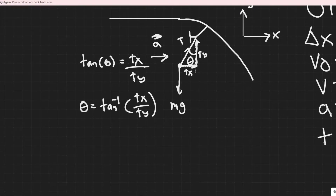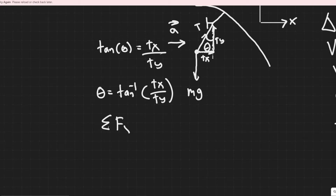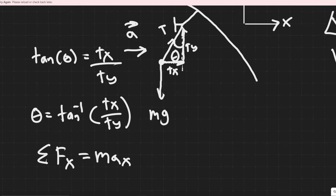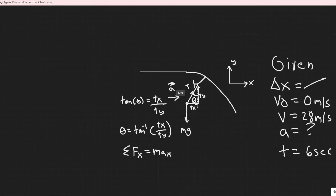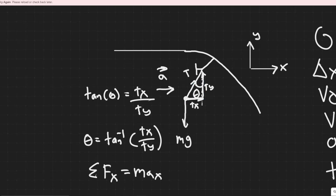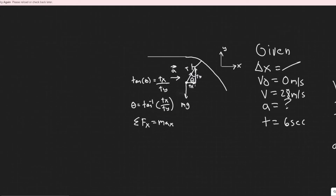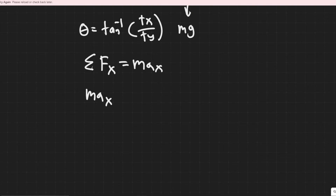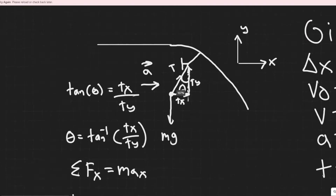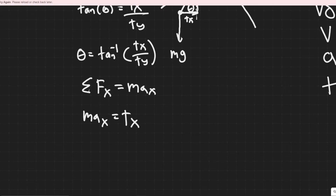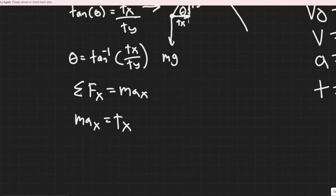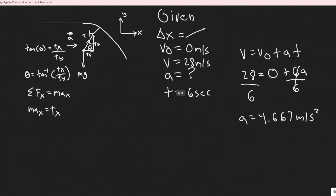Summing the forces in the x direction: ΣFx = m·ax, where ax is the acceleration we just solved for — the car's acceleration is the same as the object's acceleration in the x direction. The only force in the x direction is the tension component t sub x, since mg and t sub y are both in the y direction. So t sub x = m·ax.